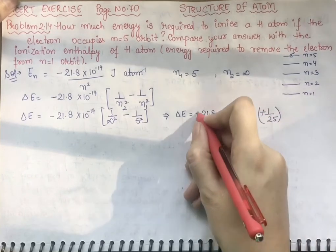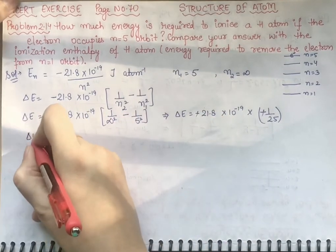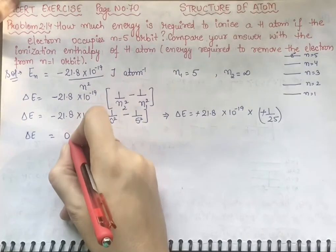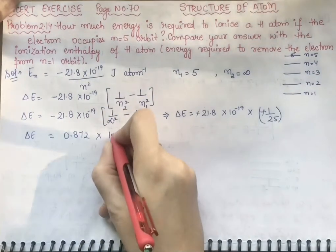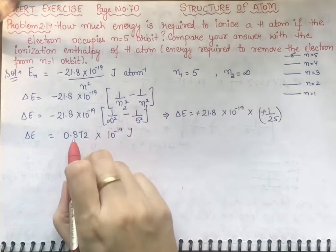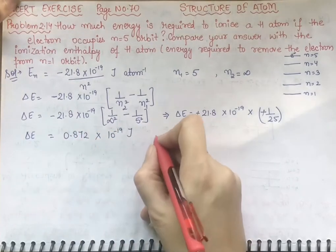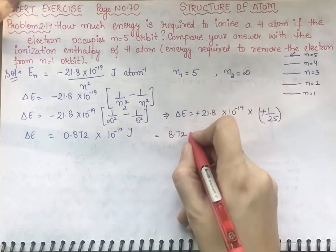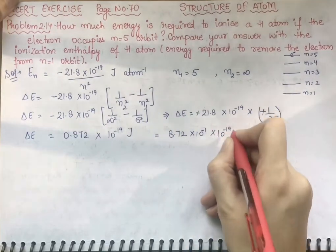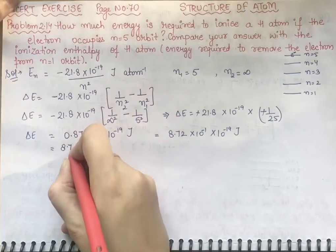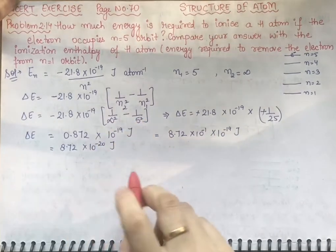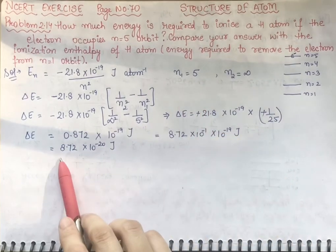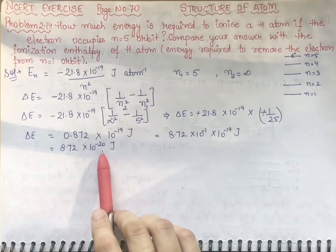The two minus signs cancel. So delta E equal to 21.8 into 10 raise to power minus 19 divided by 25, which gives 0.872 into 10 raise to power minus 19. Shifting the decimal, that is 8.72 into 10 raise to power minus 1 into 10 raise to power minus 19 joules. So the final answer is 8.72 into 10 raise to power minus 20 joules. This is the energy required to remove the electron from the fifth orbit.